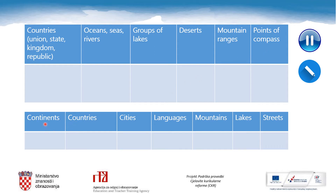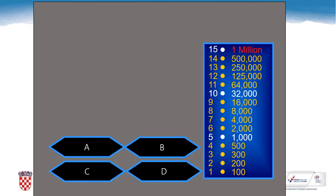In the second table: continents, countries, cities, languages, mountains but not mountain ranges, lakes but not groups of lakes, and streets. Please pause the video now and copy the tables in your notebooks. Copy any of the nouns in A, B, C or D into your tables.